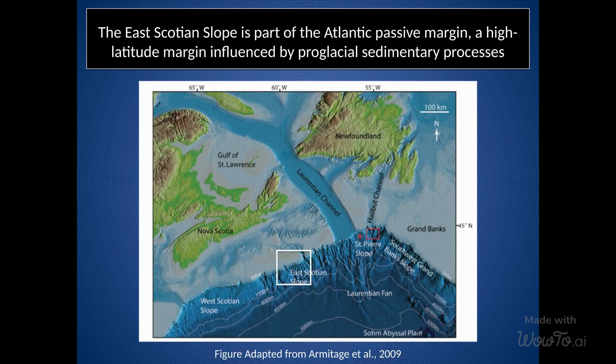In this study, I focused on the East Scotian Slope, which is located on the Atlantic Passive Margin. The study area is part of a high-latitude margin that is significantly influenced by proglacial sedimentary processes. I examined the relationship between shelf-break sedimentation and accommodation, which can affect the stratigraphic architecture of the area. I also examined the role of subglacial meltwater streams, which can plunge downslope as hyperpycnal flows and potentially deposit or erode sediment during glacial periods. Additionally, I investigated how background sedimentation occurs through the advection of sediment plumes and hemipelagic sedimentation, which can cause sediment to accumulate on the upper slope.